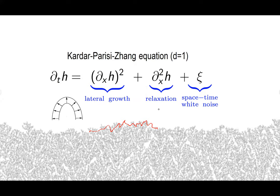The key term is the lateral growth mechanism, which is this (∂_x h)². The growth isn't just occurring in the vertical direction — the main mechanism in all these models is that the growth is appearing outwards. Therefore, the vertical component of the growth is some nonlinear function of the slope. It turns out that essentially the object you get doesn't depend on what nonlinear function you put there, so we can just put the simplest one, which is a quadratic. That's how you get this KPZ equation — a stochastic PDE for a height function h(t,x) with x in ℝ.